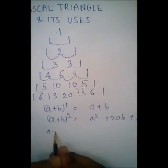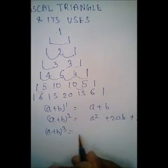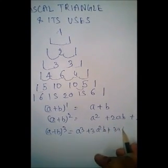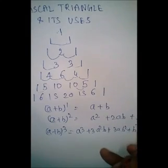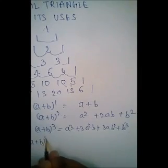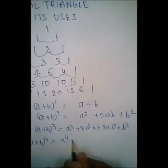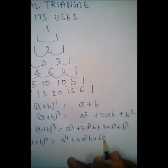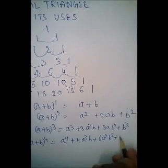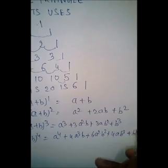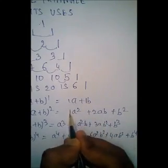Again, (a + b) raised to power 3 is equal to a cubed plus 3a²b plus 3ab² plus b cubed. And (a + b) raised to power 4 is equal to a⁴ plus 4a³b plus 6a²b² plus 4ab³ plus b⁴. Notice there is a symmetry in the coefficients: 1, 2, 1 then 1, 3, 3, 1 then 1, 4, 6, 4, 1.